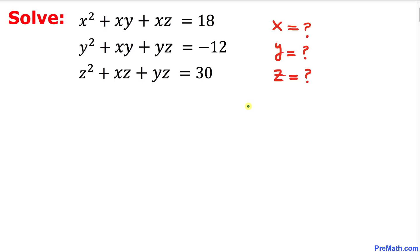Welcome to pre-math. In this video tutorial we have got a system of three equations with three variables, and we are going to solve for x, y, and z. The system is: x squared plus xy plus xz equals 18; y squared plus xy plus yz equals negative 12; and z squared plus xz plus yz equals 30.